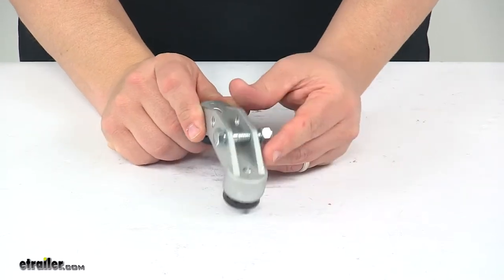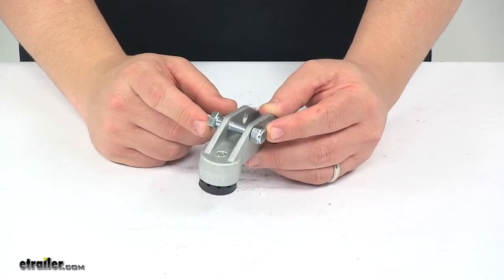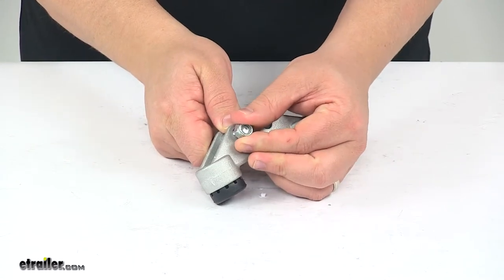One toggle is included, and it comes with new mounting hardware, so that's your bolt and your nylon lock nut.